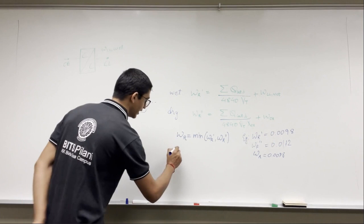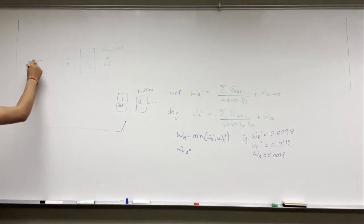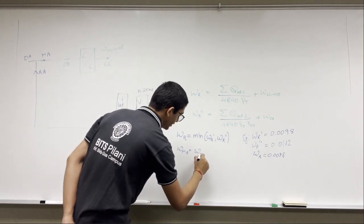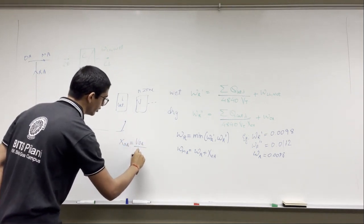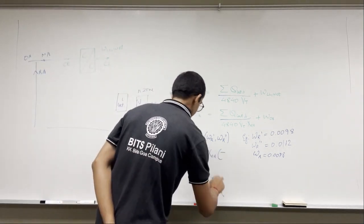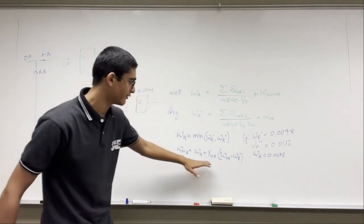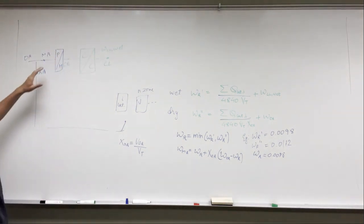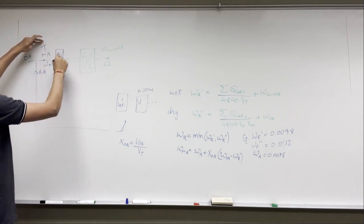Then omega_ma — the mixed air humidity — will be omega of return air plus X_OA times the quantity omega of outside air minus omega of return air. The preheat coil doesn't make any difference because the humidity ratio doesn't change in the preheat coil, so the humidity omega_ma entering the preheat coil is the same as omega_ma leaving it and entering the cooling coil.